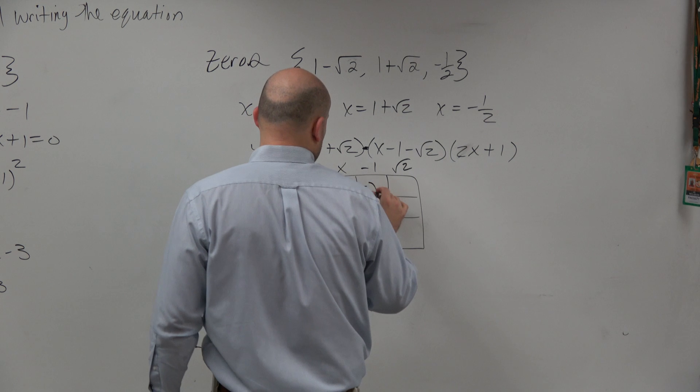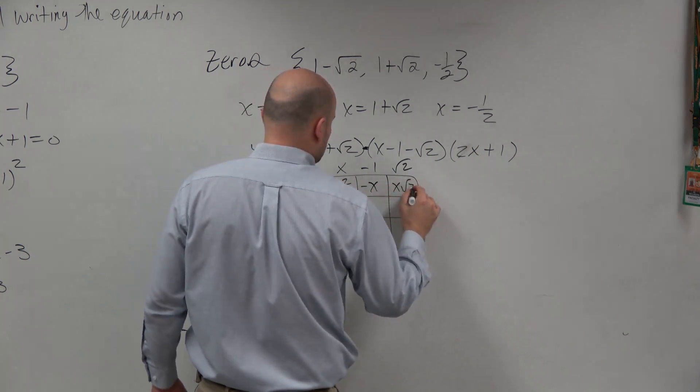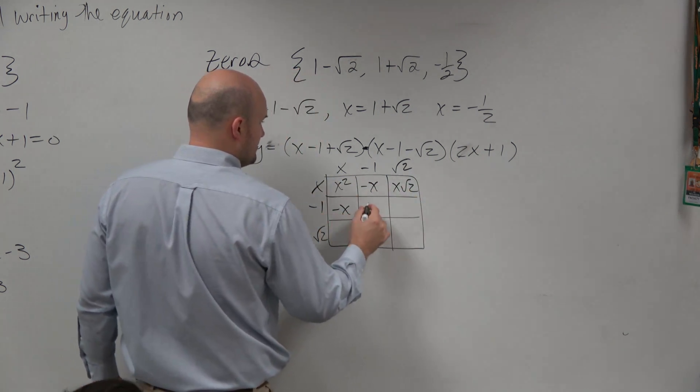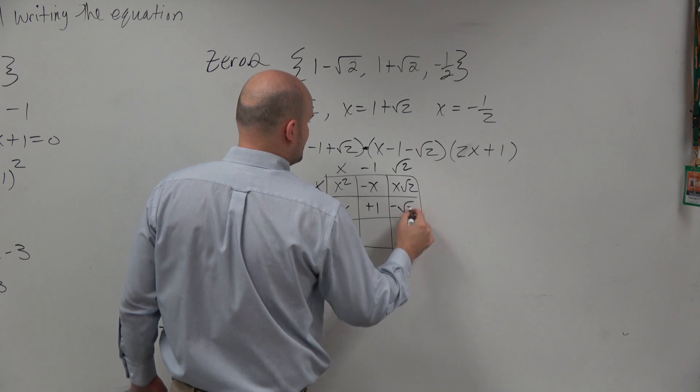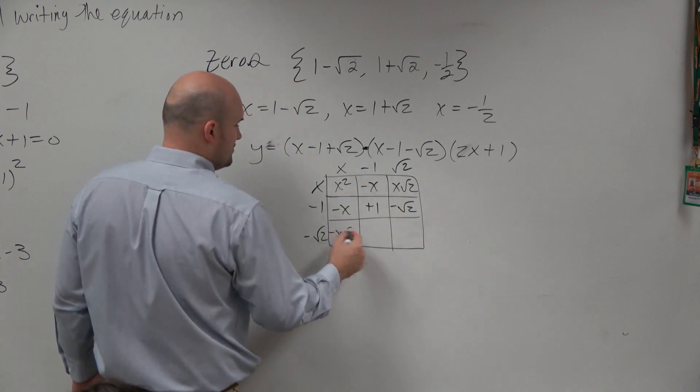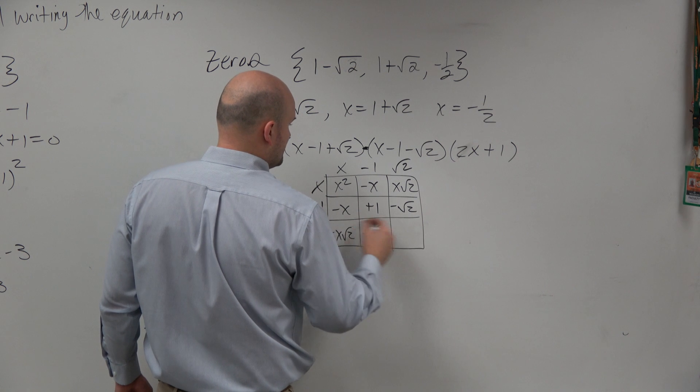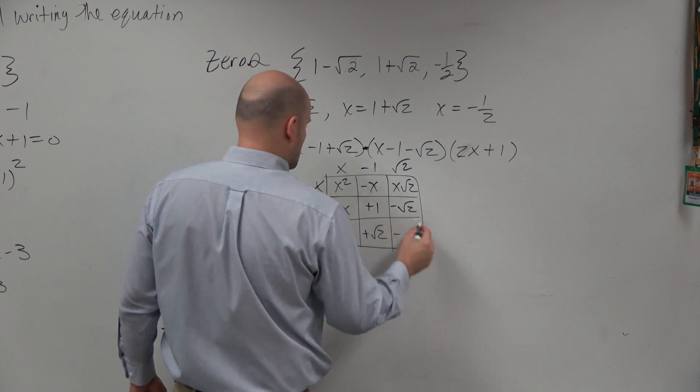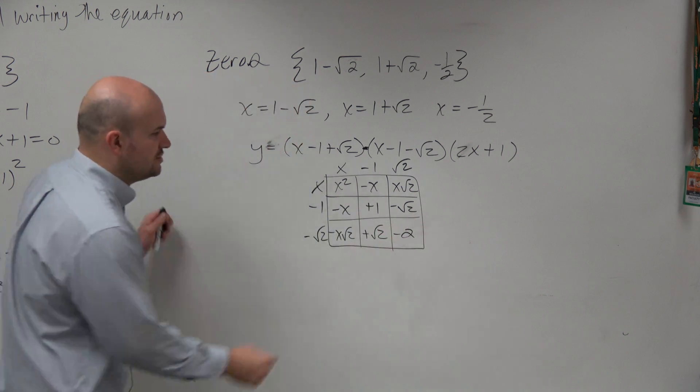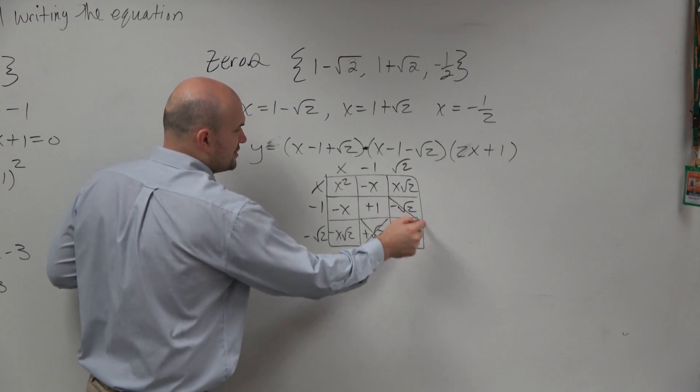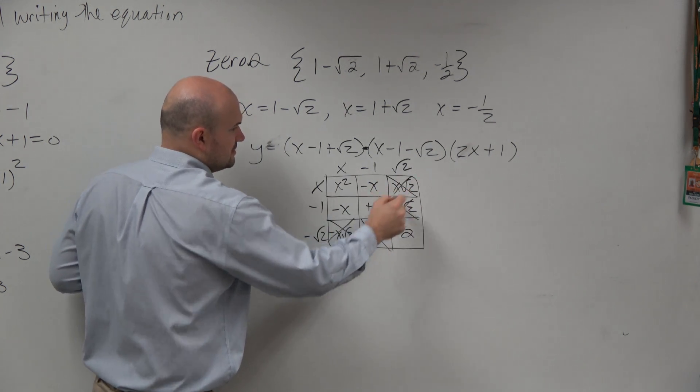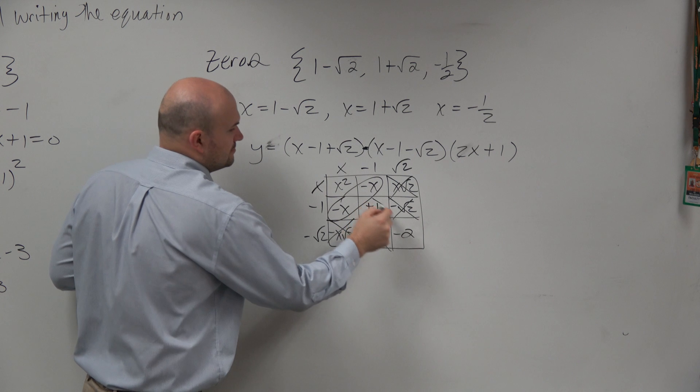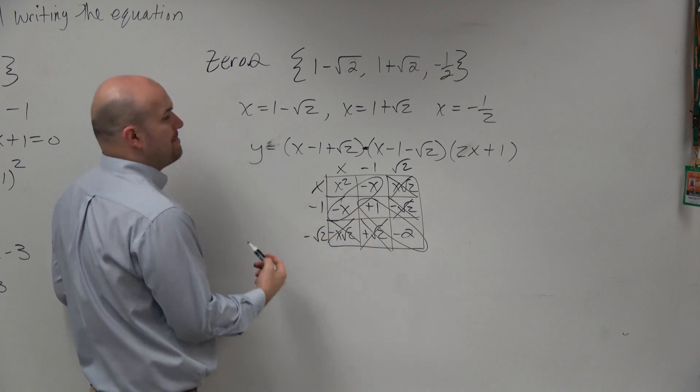So we get x squared, negative x, x square root of 2, negative x plus 1, negative square root of 2, negative x square root of 2, positive square root of 2, and negative 2. And if you guys remember, terms are usually going to add to 0, so we're going to be kind of good. So it's actually not that bad.